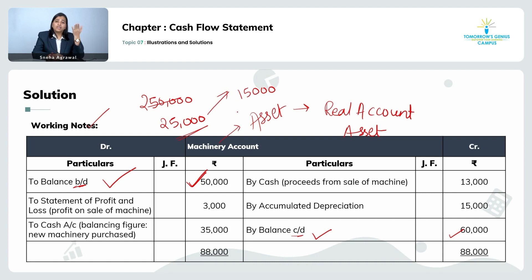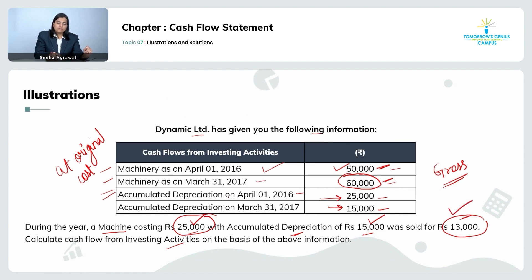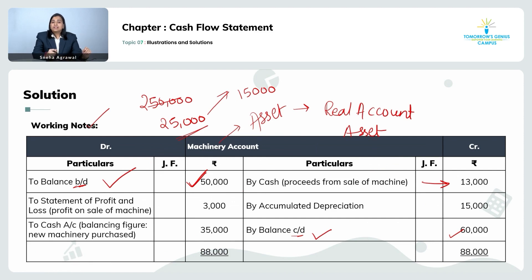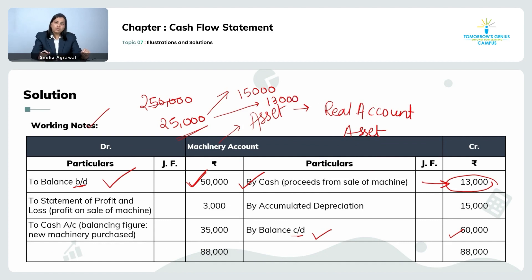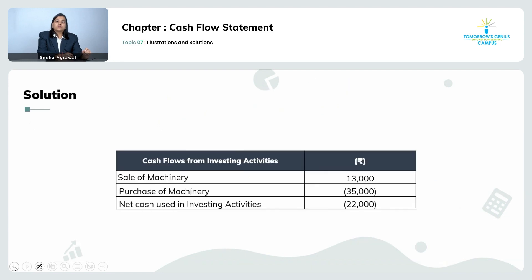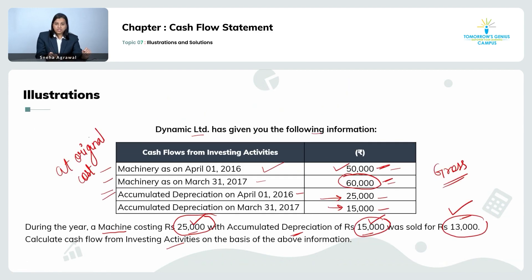We calculate profit or loss by comparing the sale value and the written-down book value of the asset as on today. The sale value is 13,000. The journal entry when we sell the asset is: cash or bank account debit to machinery account. So I write 'by cash: 13,000.' The accumulated depreciation on the machinery sold is 15,000 — the total depreciation accumulated till date.